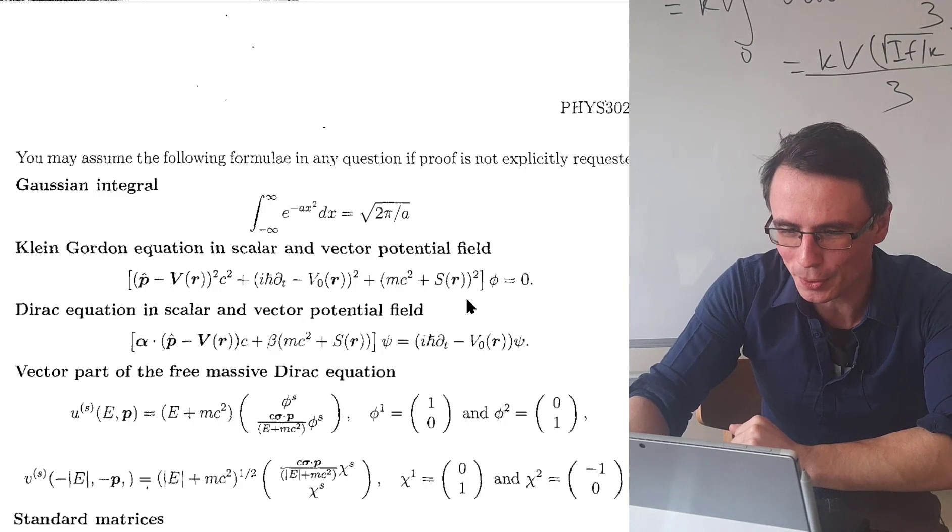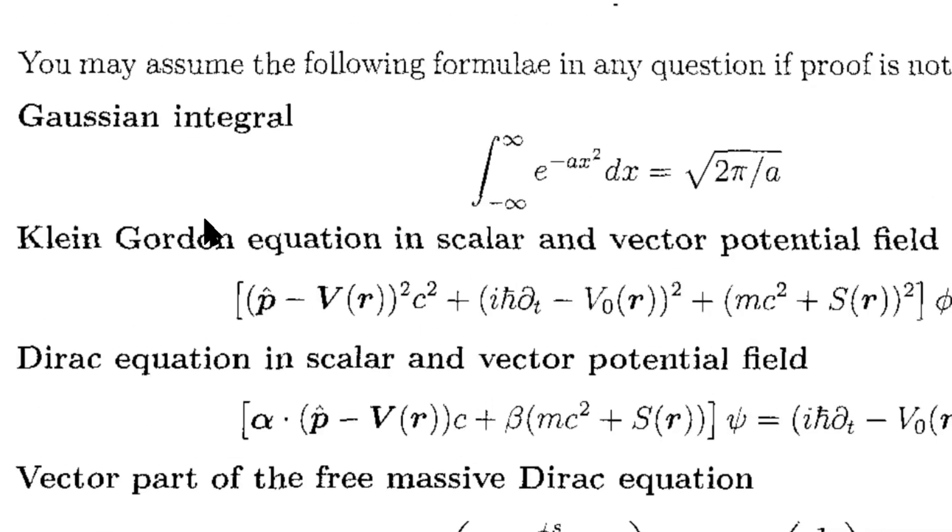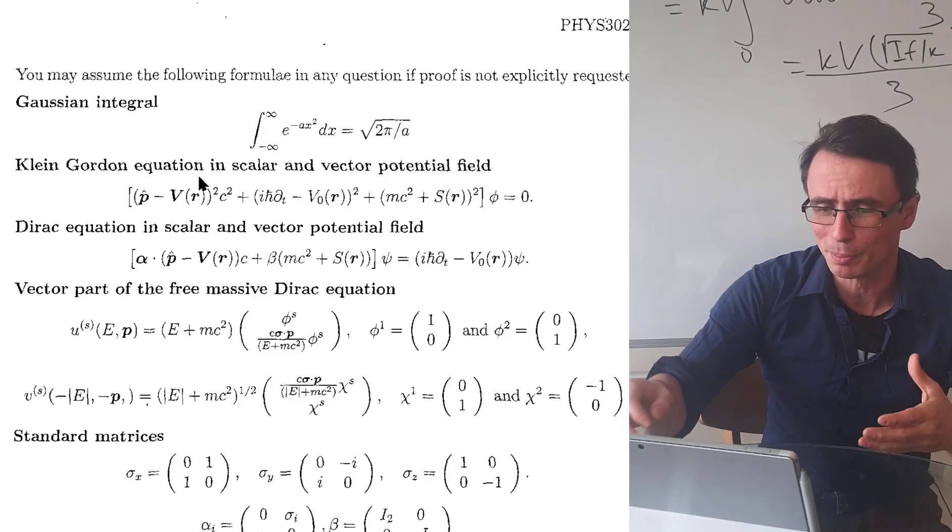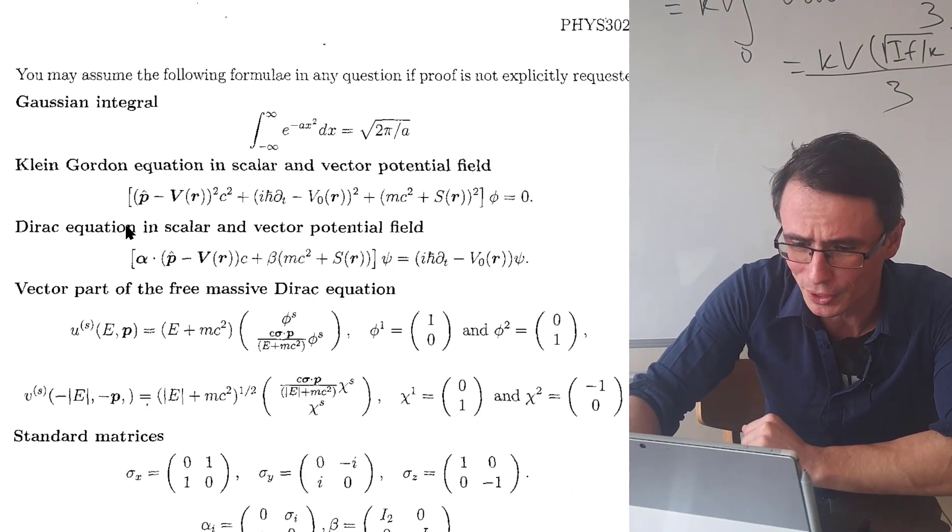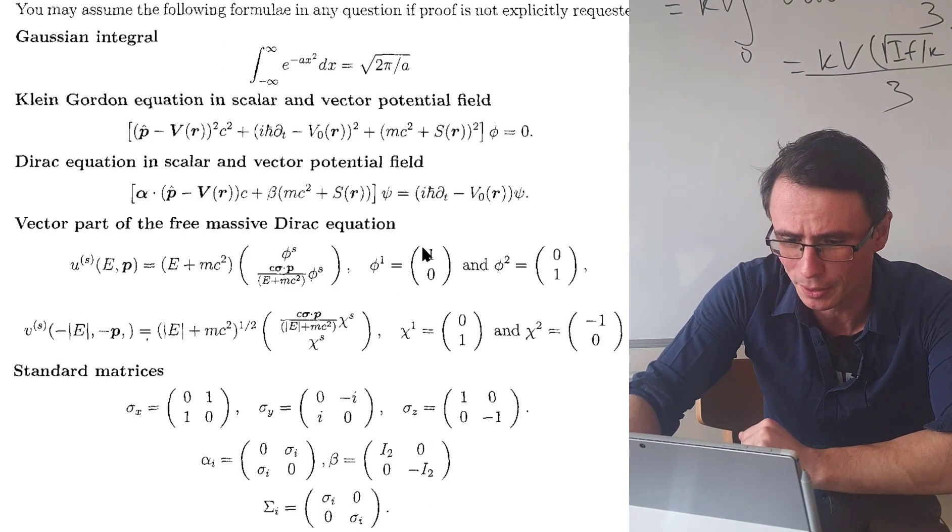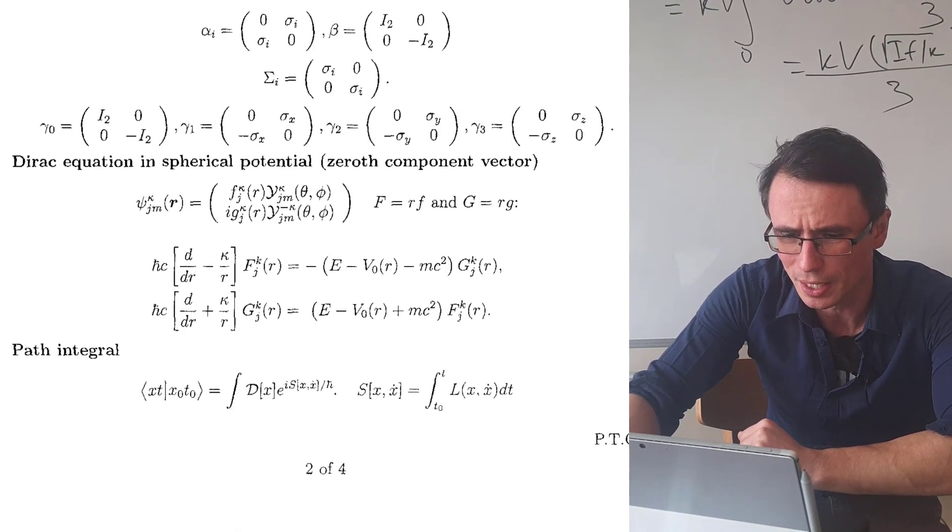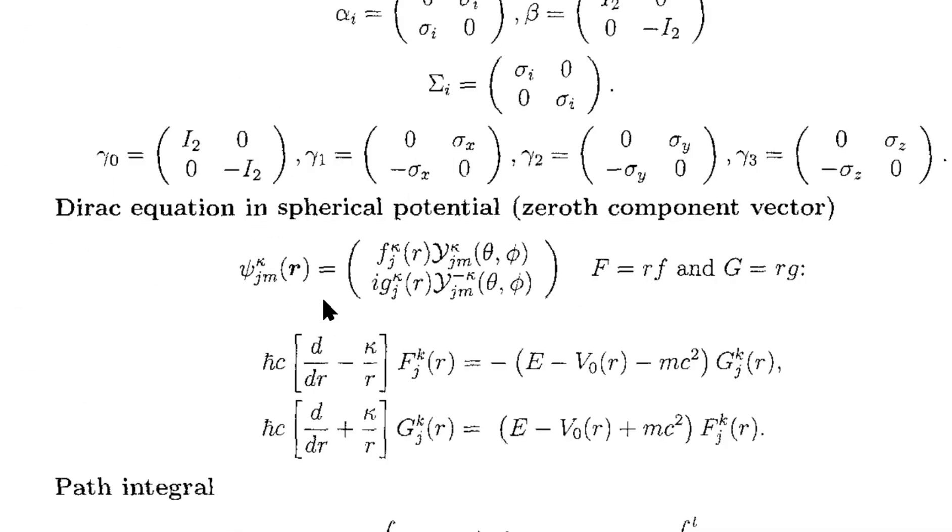Oh look at this, we've got some integrals that are given, we've got the Gaussian integral right over here. We're given the Klein-Gordon equation which is a relativistic equation in quantum mechanics for spinless particles. We also have the Dirac equation in scalar and vector potential field. We have some standard matrices and they've kindly given us the Dirac equation in a spherical potential.